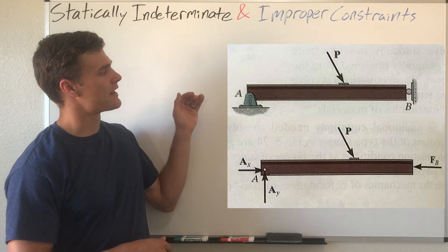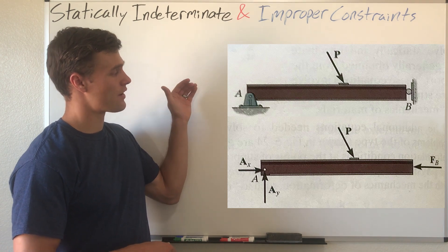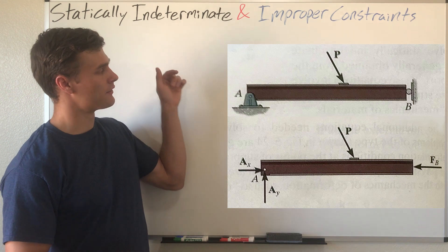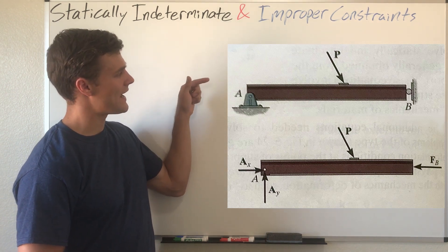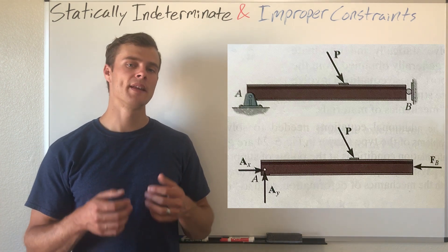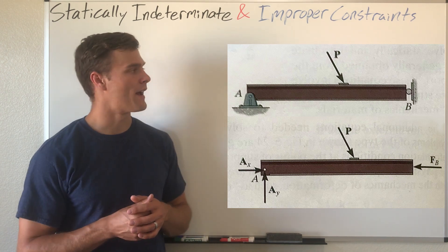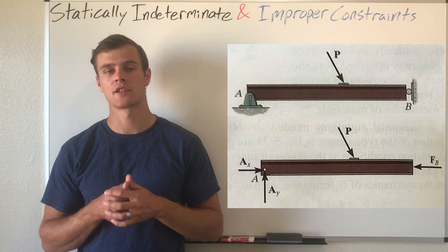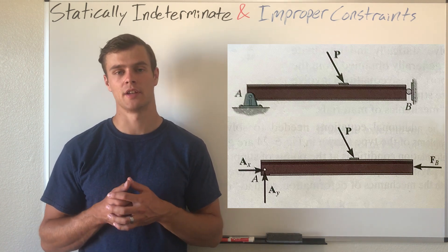If we have this beam with a force P on it, you can see just by looking at it that the load P is going to cause a moment about point A on that pin, and it's just going to cause it to rotate — meaning it's not going to be in equilibrium. Improper constraints cause an object to not be in equilibrium under certain loads.